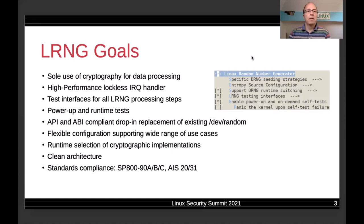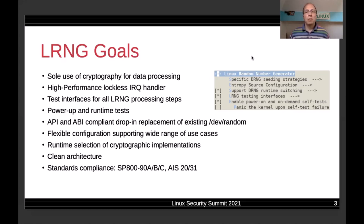During power-up and at runtime, certain tests are applied to the received data and to the implementation itself to make sure we always have untainted data. A key element is that the LRNG attempts to be API and ABI compatible to the existing Dev random implementation. The patch set provides a kernel configuration option that allows LRNG support to be enabled or disabled. If disabled, the existing Dev random implementation is compiled. If you apply the LRNG patch, there is no change needed in the remainder of the kernel or in user space.